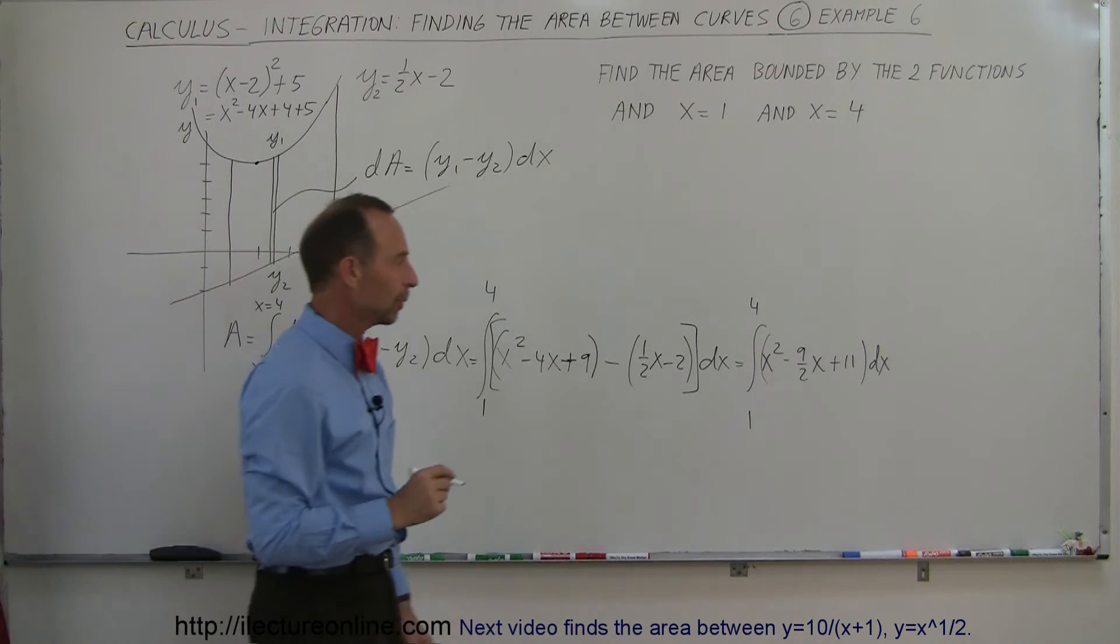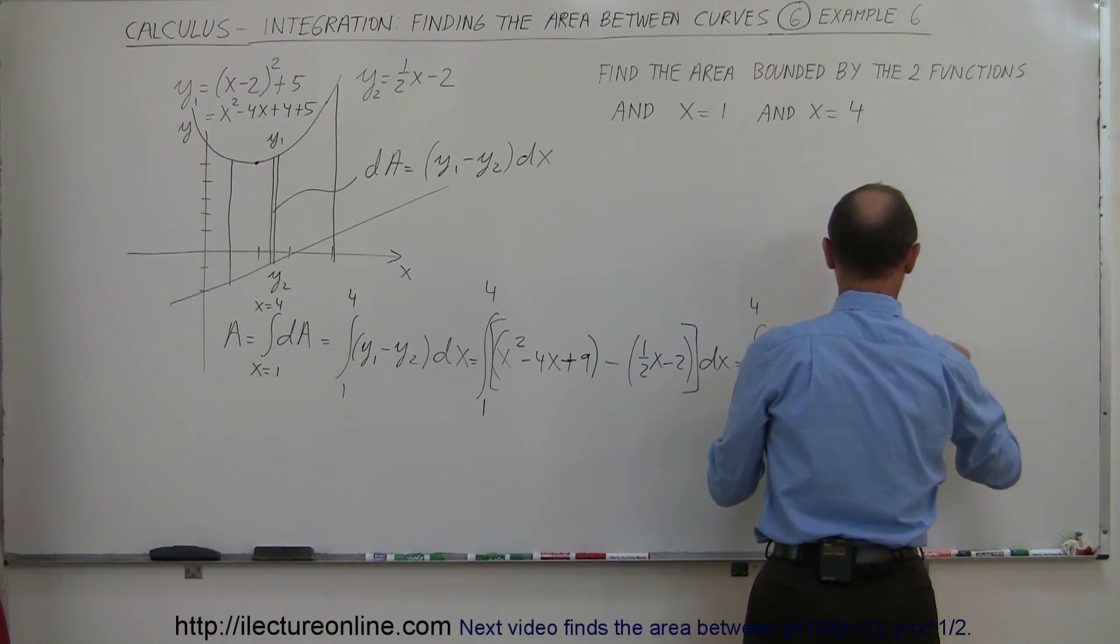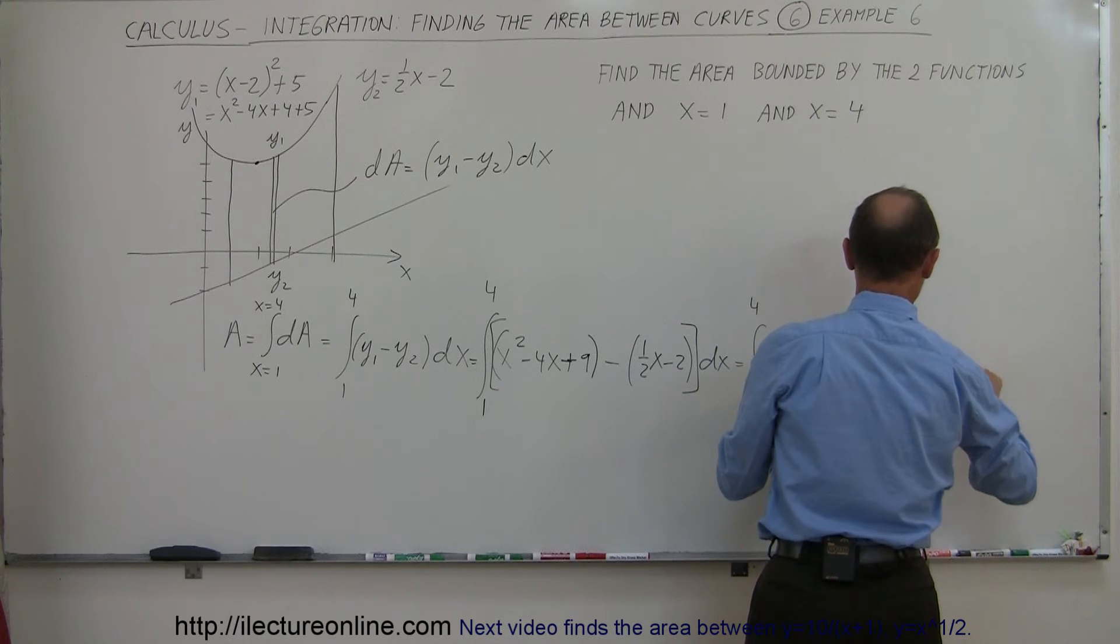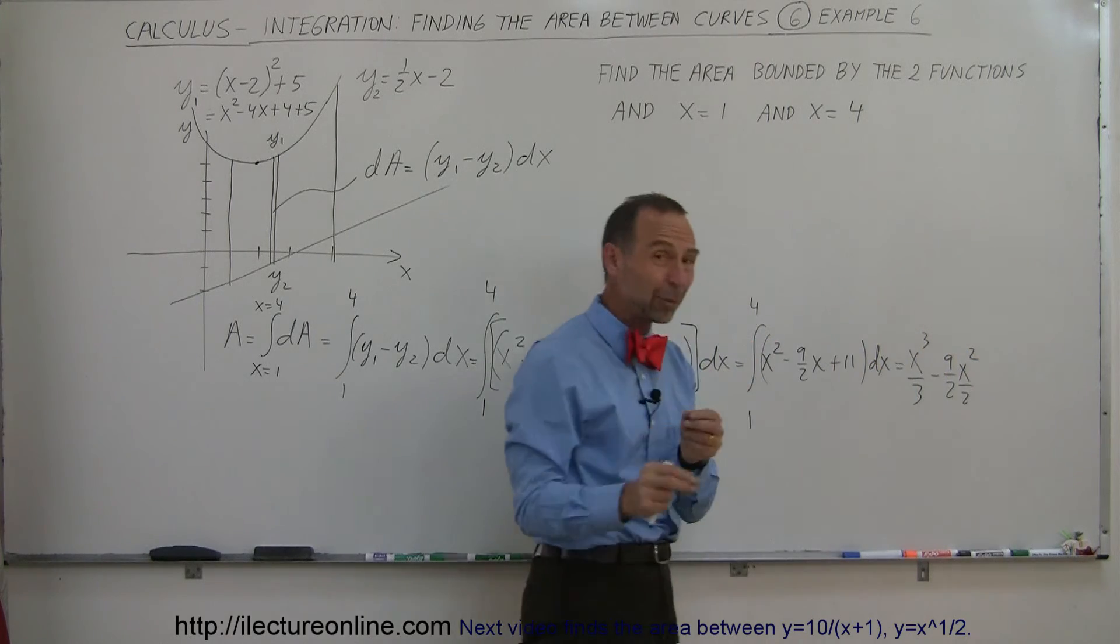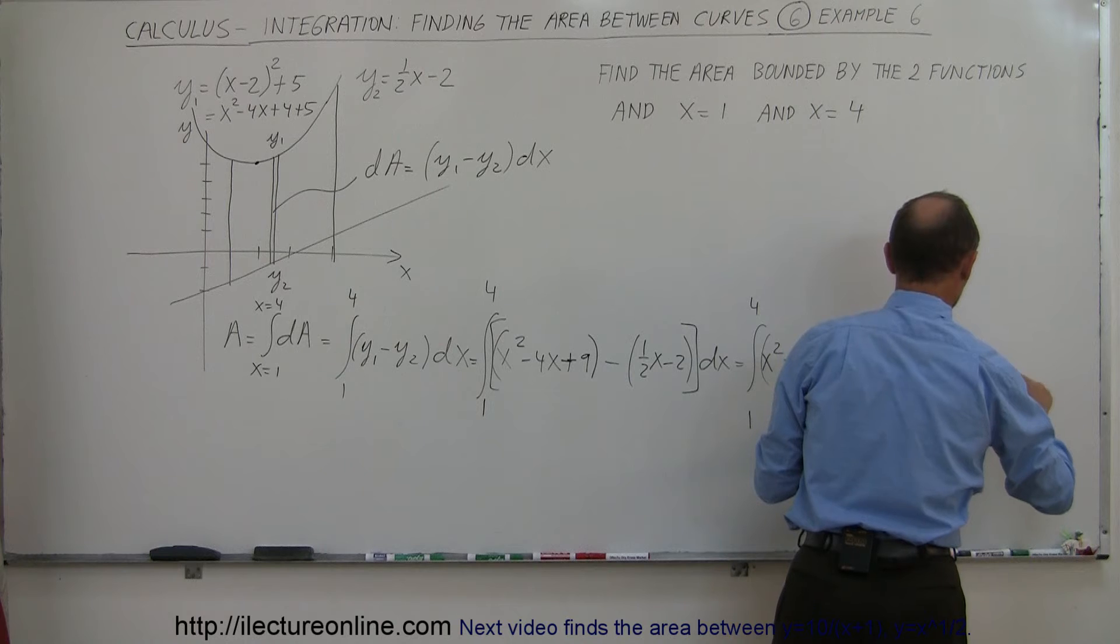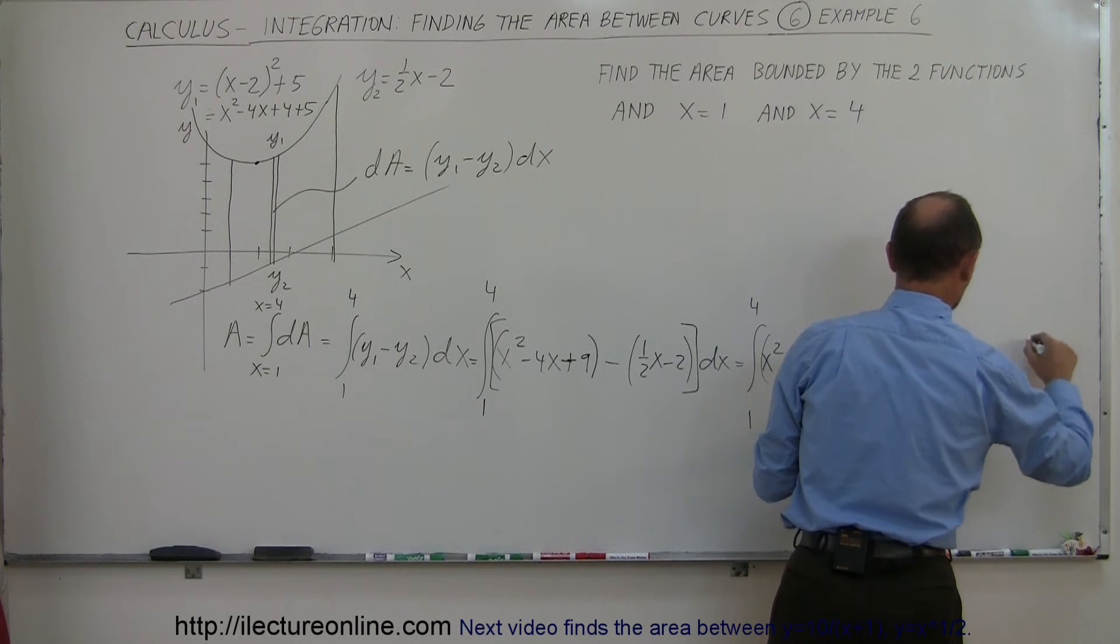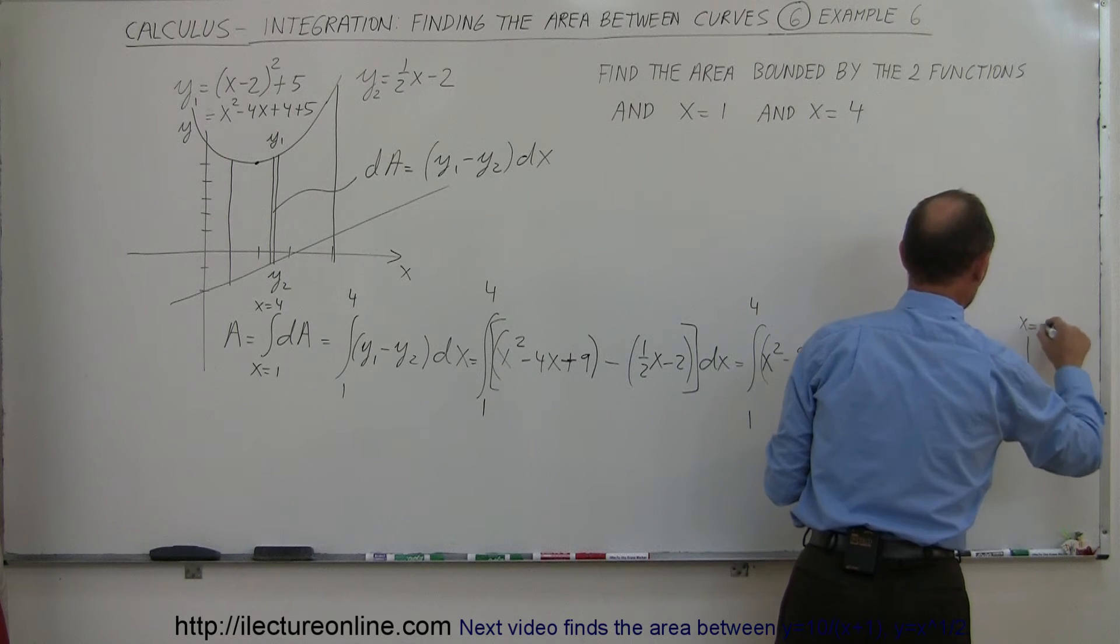When I integrate, what do I get? Well, this is equal to x cubed over 3 minus 9 over 2 x squared over 2. Remember, each time you add one to the exponent and divide by the new exponent. And finally I get plus 11x. And I'm going to evaluate all that from x equals 1 to x equals 4.